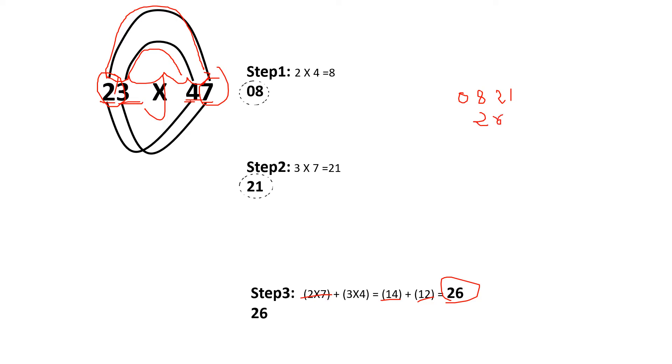See, focus on the screen. 0, 8, 2, 1. We have already written on the screen on right side. 0, 8, 2, 1 like this. And then the 26. That is, we have gotten third step. We will add.